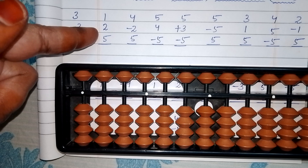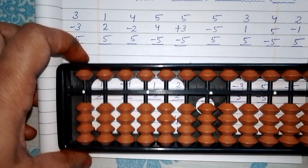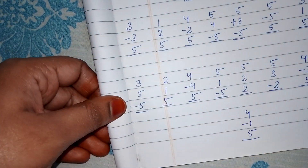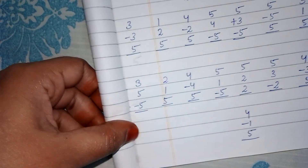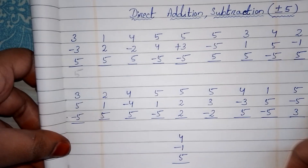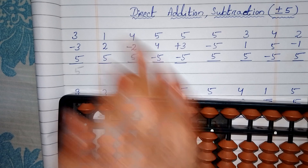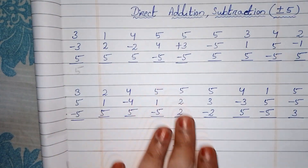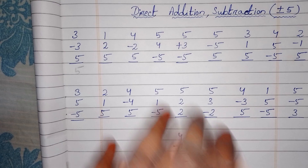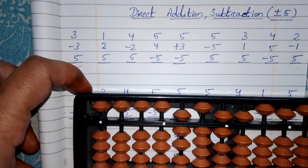The next question is one, two, five. Before my explanation, take a screenshot so you can practice. After my explanation, check your answer on the abacus and compare it to the answer here — this is the exercise or homework for you.